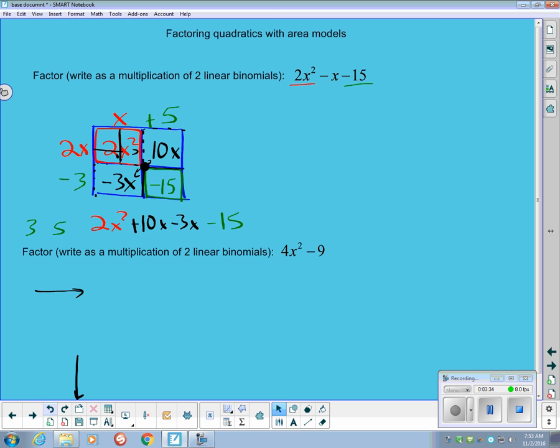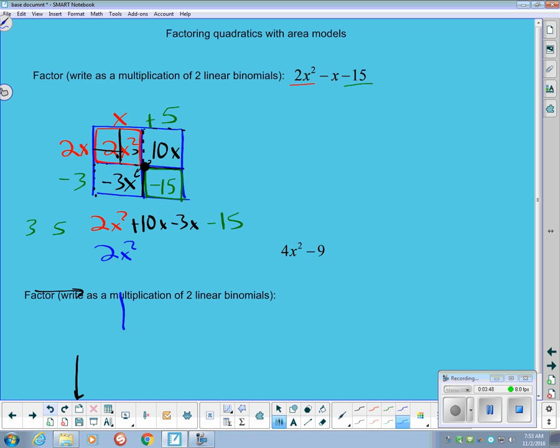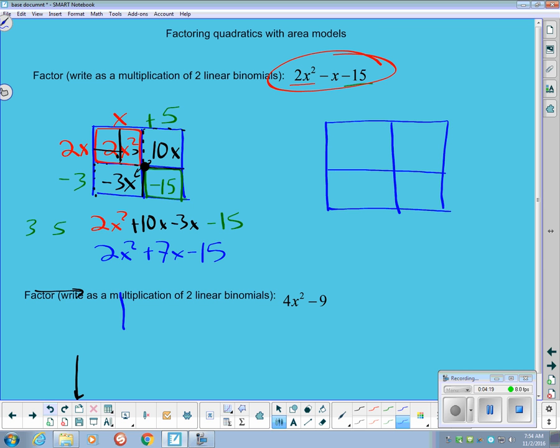And the problem is that when I throw all of these together, I get a 2x squared, 10x minus 3x is plus 7x minus 15, but that's not the number or not the equation that I was trying to get, the expression. I was trying to get this one up here, this 2x squared minus x minus 15, but I got a plus 7x, which tells me I need to change the choices that I made in my diagram. Okay, so I will try another one.